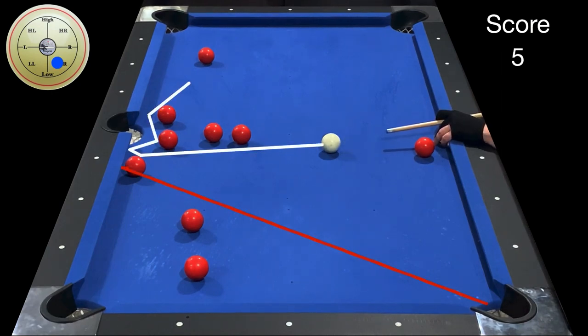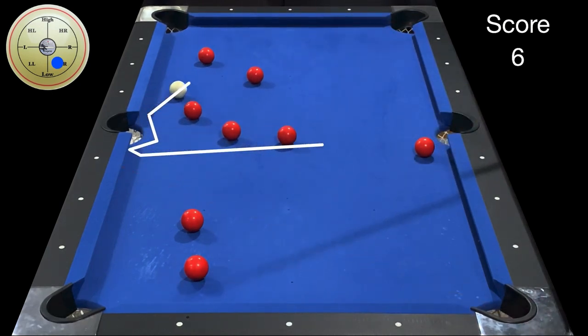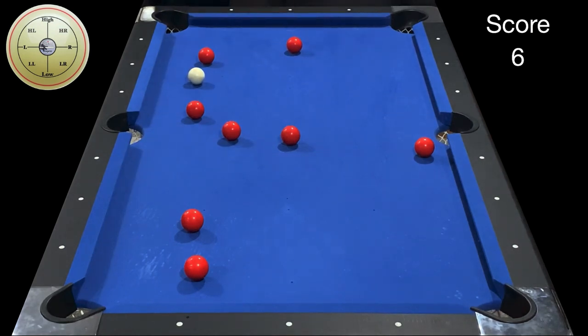When I bank this ball I'm going to go bottom right so that I can disturb the cluster but at the same time land on the proper side of the table. Now all my shots are in front of me.